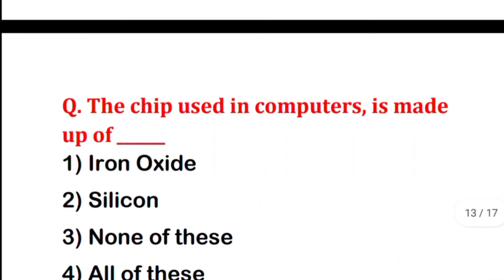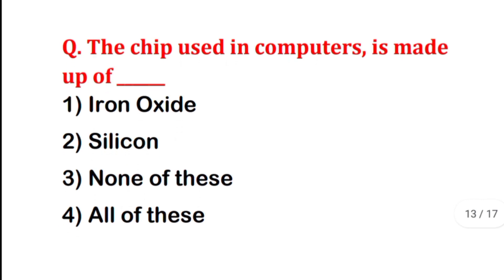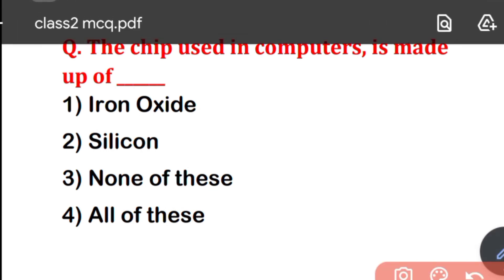The chip used in the computer is made up of which material? Options are: Iron Oxide, Silicon, None of these, or All of these. The correct answer is the second option — Silicon. Chips used in computers are made of silicon.